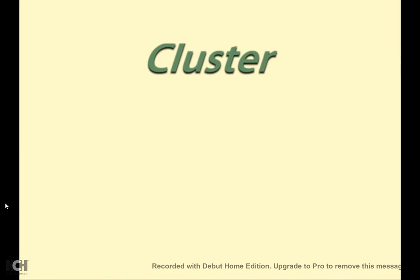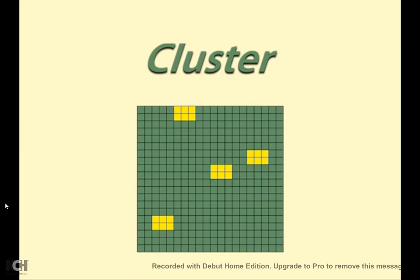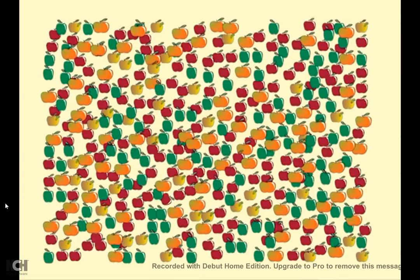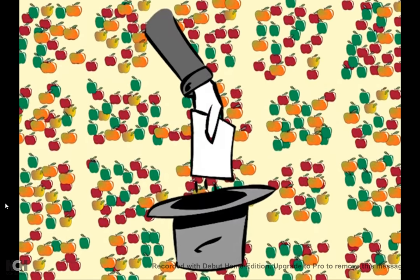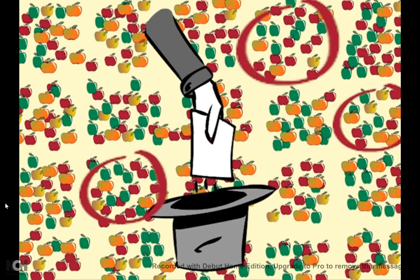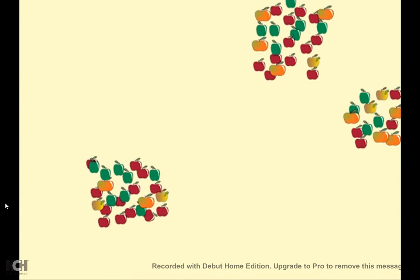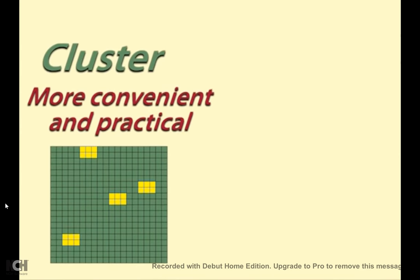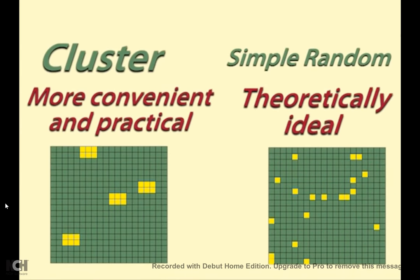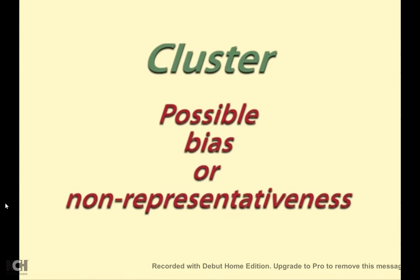In cluster sampling, the population is divided into clusters which are then chosen at random — for example, departments of a business or suburbs within a city. Within each cluster, all of the objects are included in the sample. Cluster sampling can be more convenient and practical than simple random sampling. However, if the clusters are different from each other with regard to the elements being measured, it can lead to bias or non-representativeness.